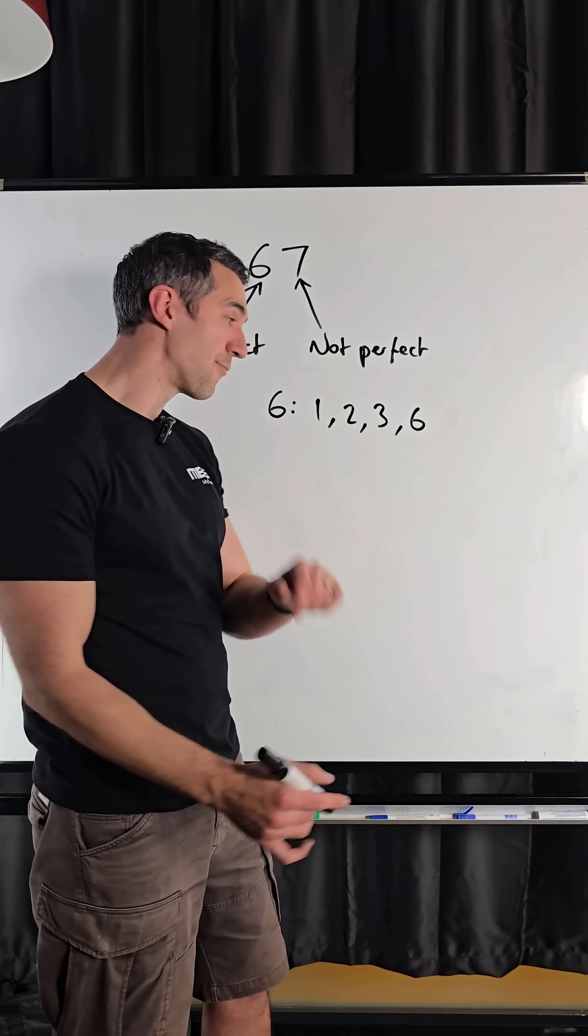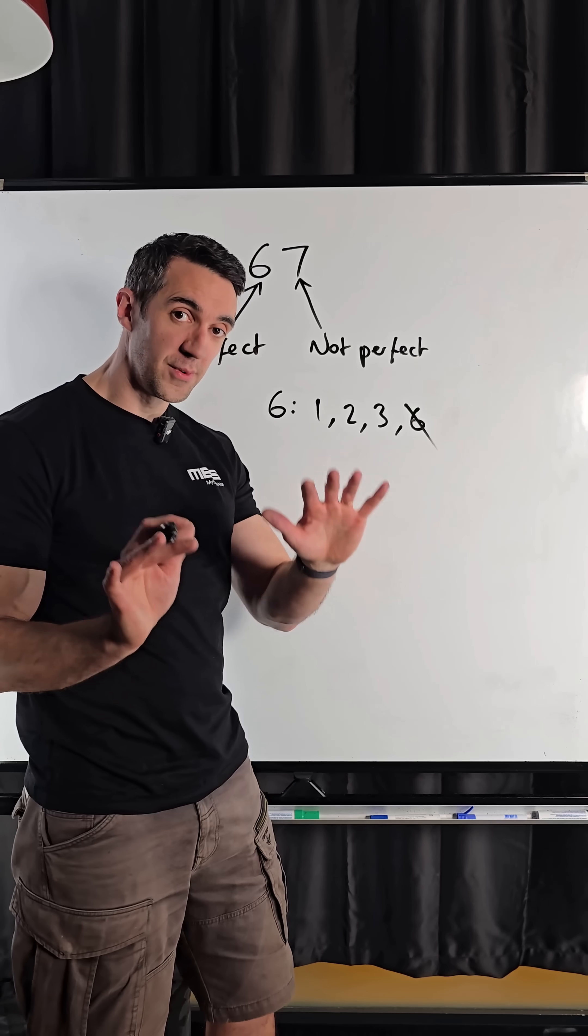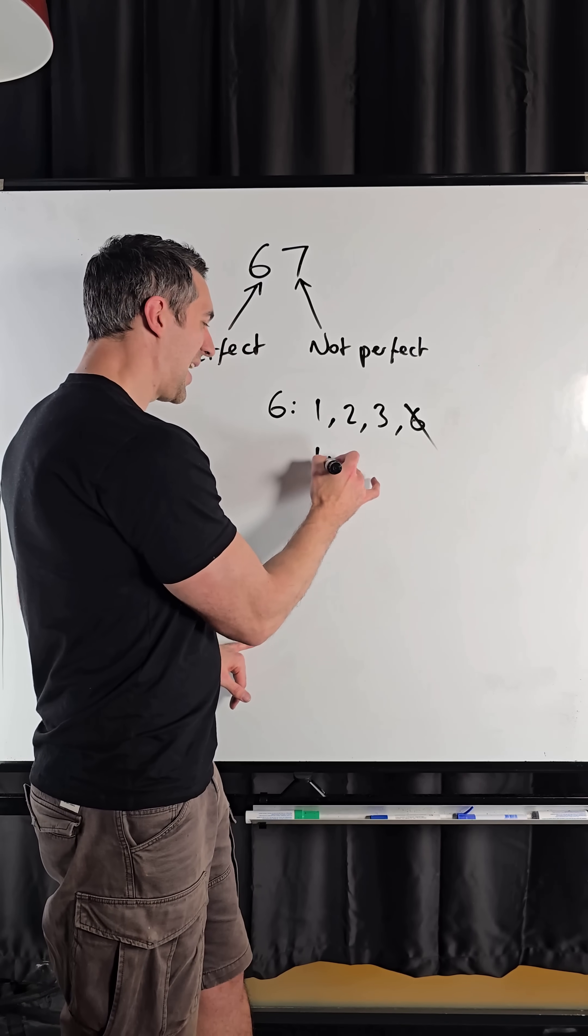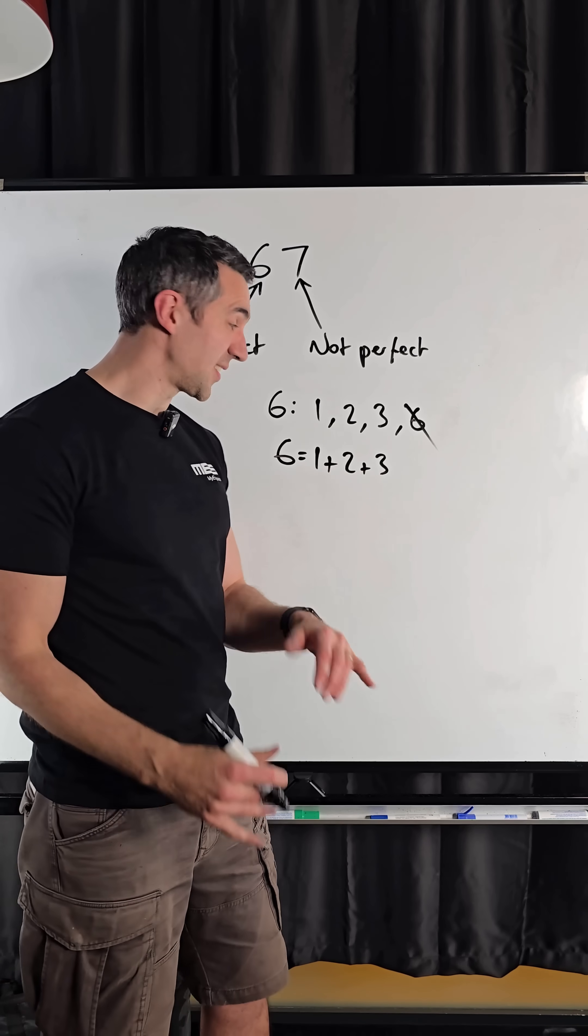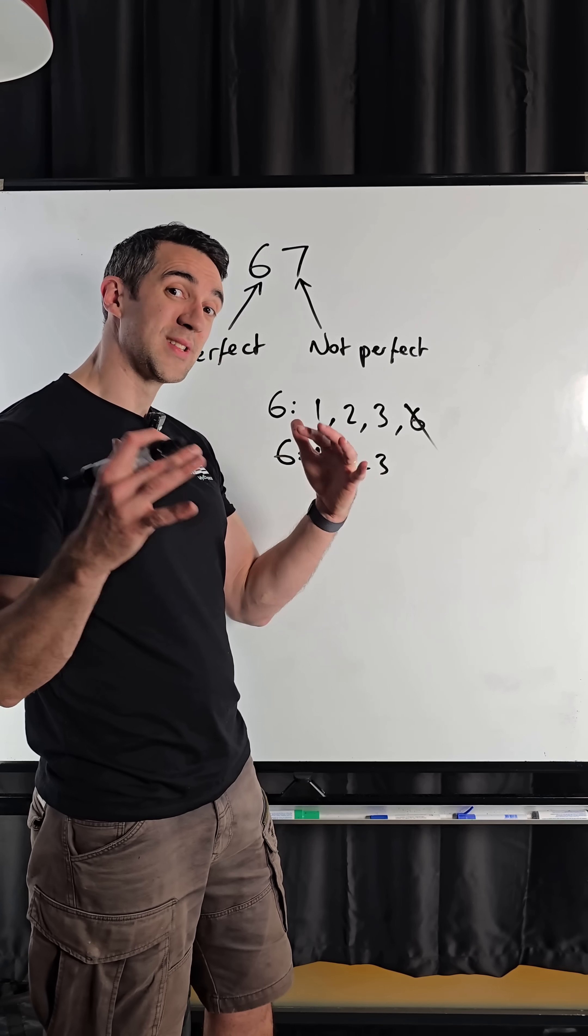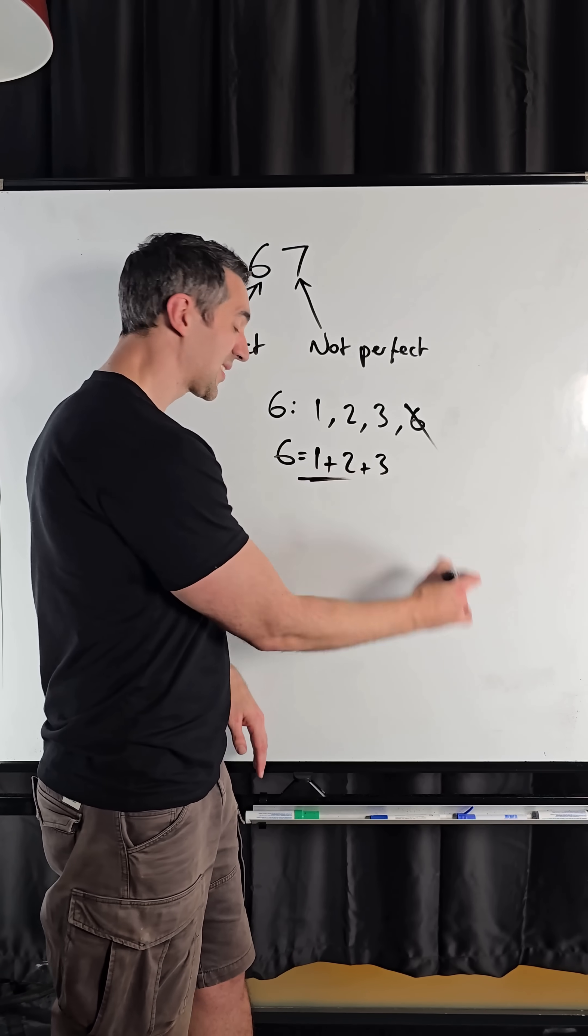Those are all of the factors. If I get rid of the number itself, we remove that one, and I add the factors that are remaining, I get six. I get the number I started with that I was listing the factors of, and that is why six is perfect.